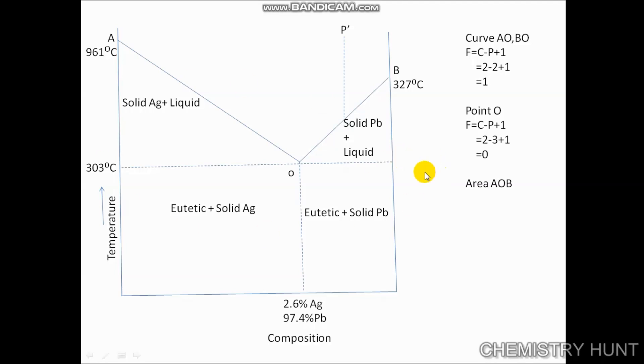This was all about curve AO, point O (the eutectic point), and area AOB. In a silver-lead alloy system, we say it has two curves, one point O called the eutectic point, and one area, AOB. Above the phase diagram, we say that the vapor phase is neglected. Below, we are considering the solid lead, solid silver, and the solution. This was all about the silver-lead alloy system.